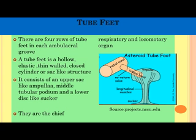Tube feet: there are four rows of tube feet in each ambulacral groove. A tube foot is a hollow, elastic, thin-walled structure. It can be divided into three parts: the upper sac-like ampulla, the middle tubular podium, and the lower disc-like sucker. Their main function is respiratory as well as locomotory.